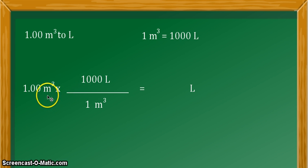So, the unit here that we are given with is cubic meter, so it should be in the denominator for it to cancel out.